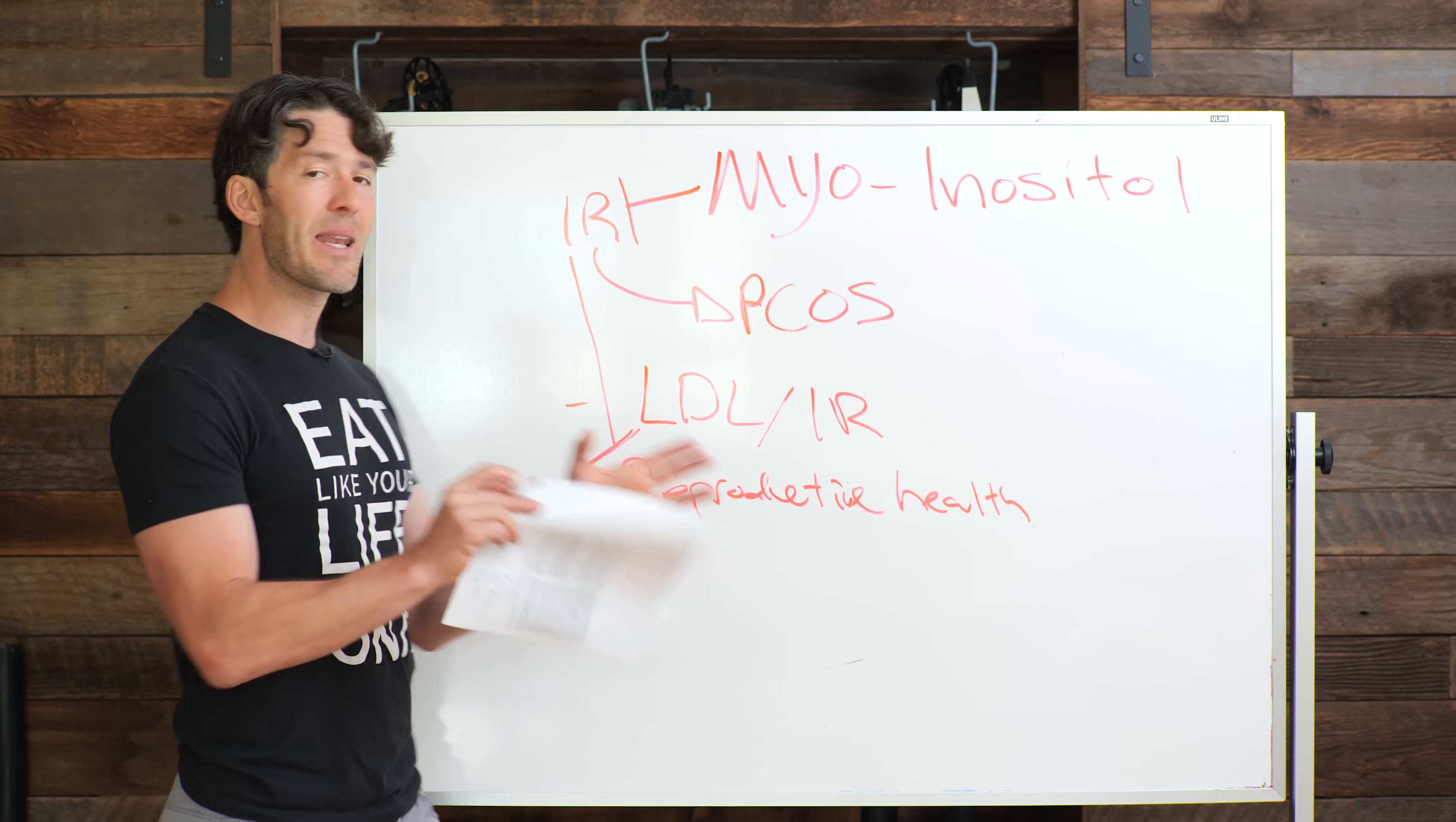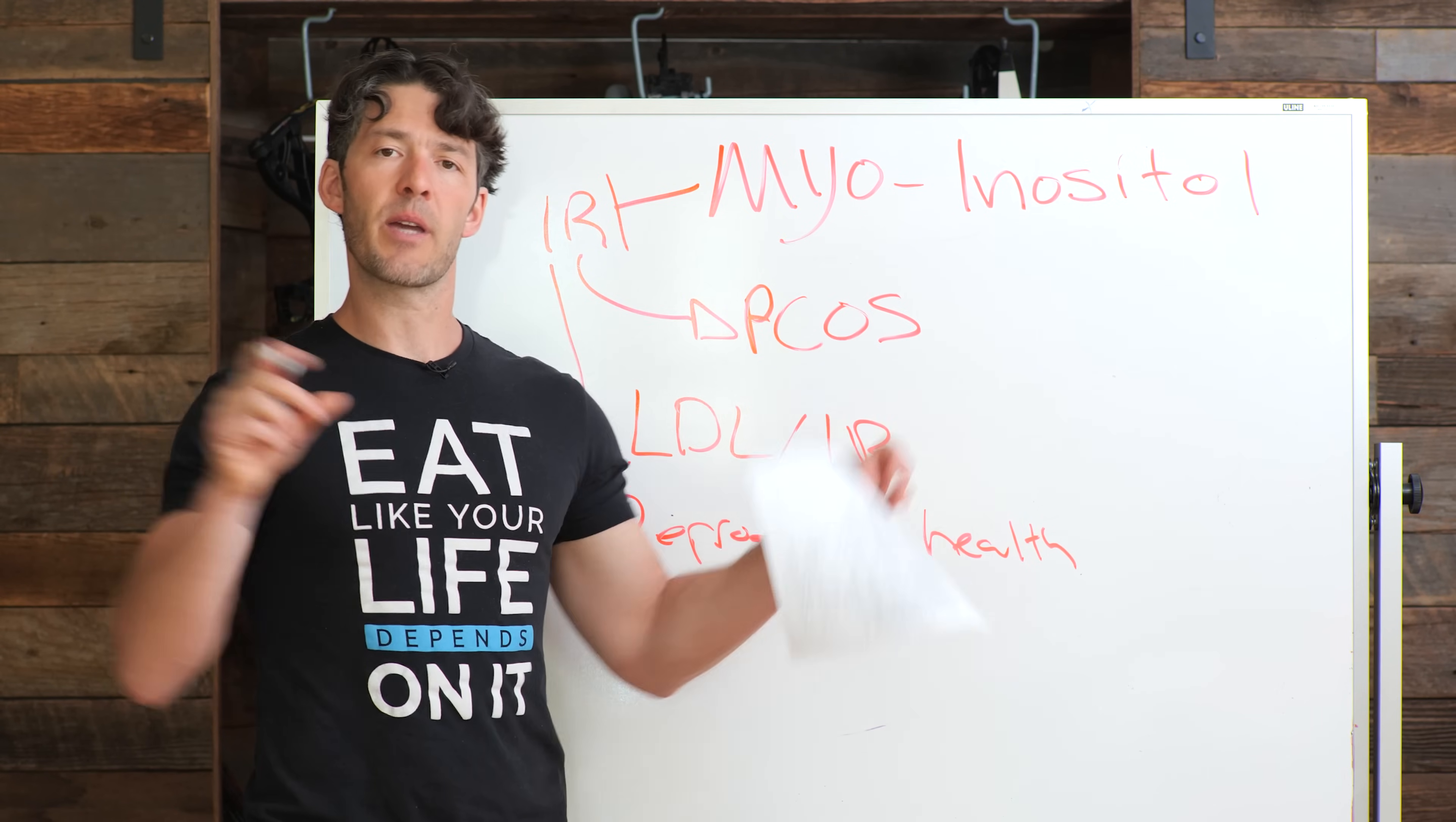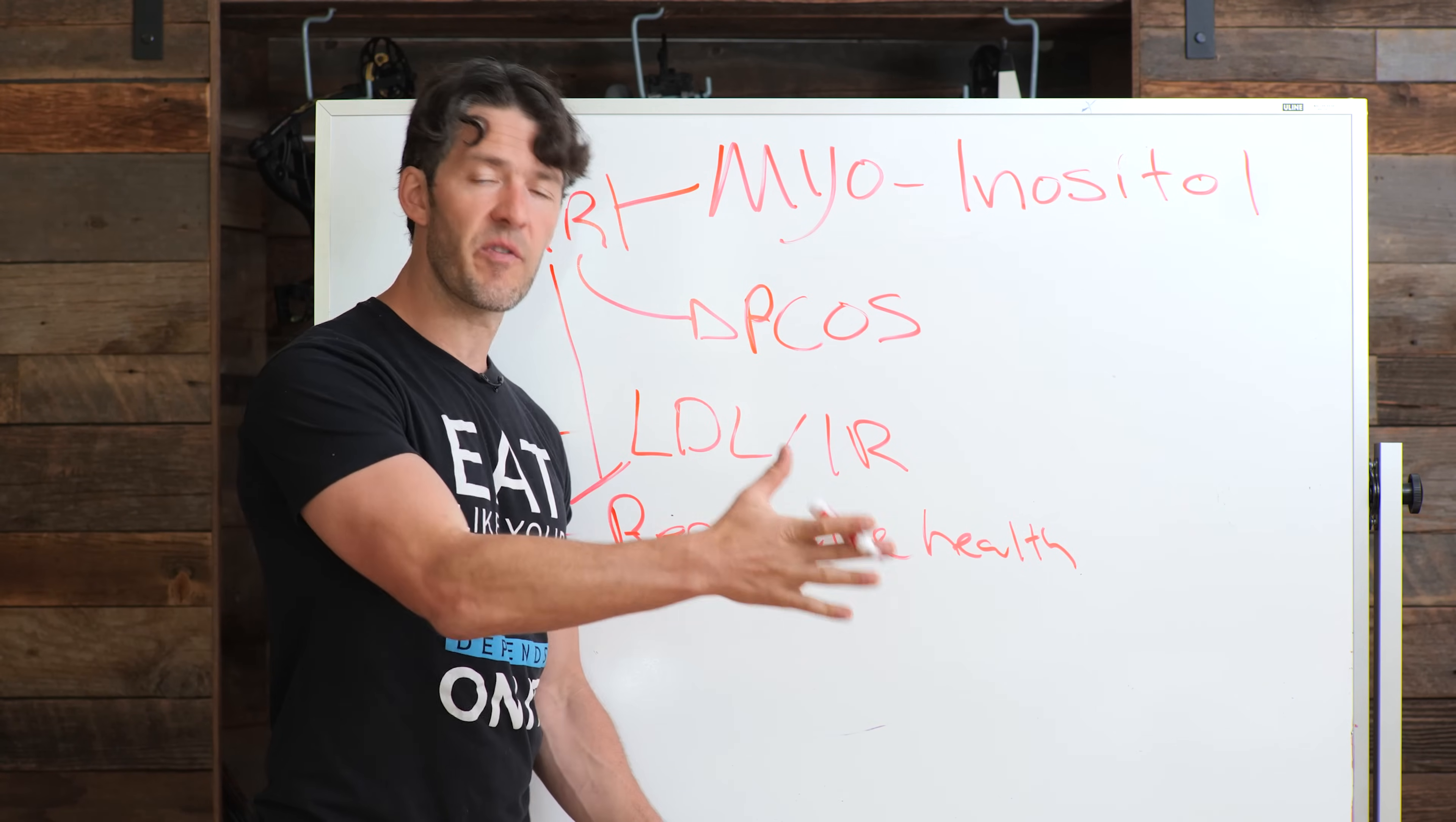When you affect cell signaling and metabolism, you improve the whole network. Someone had shared with me a long time ago, her name is Martha Herbert, this idea of a spider web. When you pull on a spider web, you're not just pulling on one string, you're affecting the whole network. And this is where natural products, exercise, lifestyle, sleep, stress reduction—you're affecting the whole network. You're not just affecting one pathway.